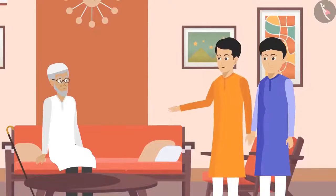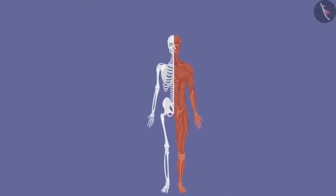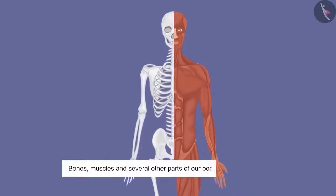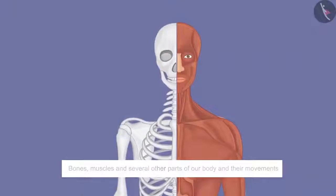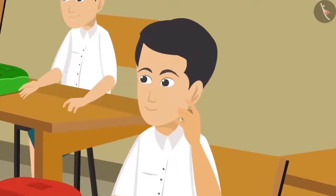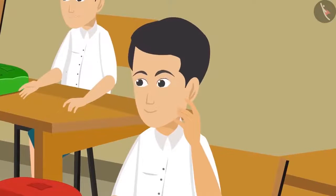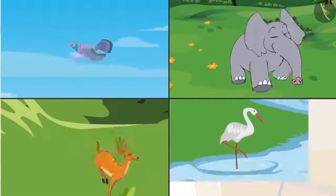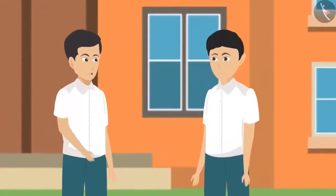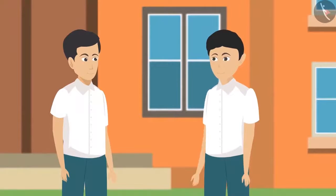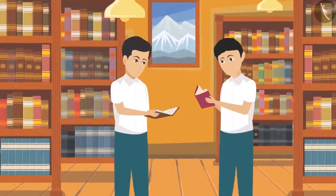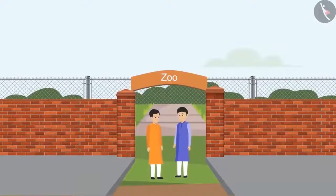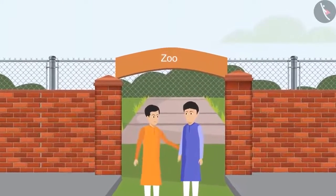Zeeshan and Sikandar had successfully passed Raheem Chacha's exam on bones, muscles, and body movements. During school, an idea crossed Zeeshan's mind — other living beings also move, but in very different ways from humans, possibly because their body structures are different. He shared this with Sikandar, who suggested visiting the zoo on Sunday. They studied about it in the school library and reached the zoo on Sunday.